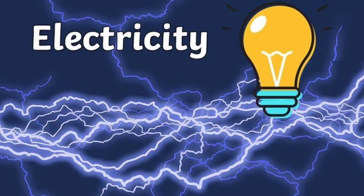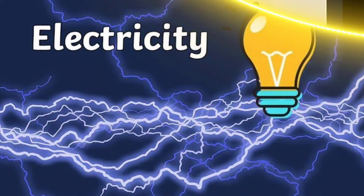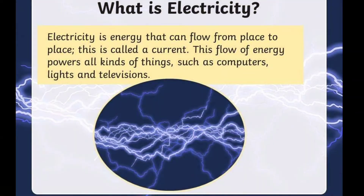Today's lesson is about electricity. Electricity is energy that can flow from place to place. This is called a current. This flow of energy powers all kinds of things such as computers, lights, and televisions.